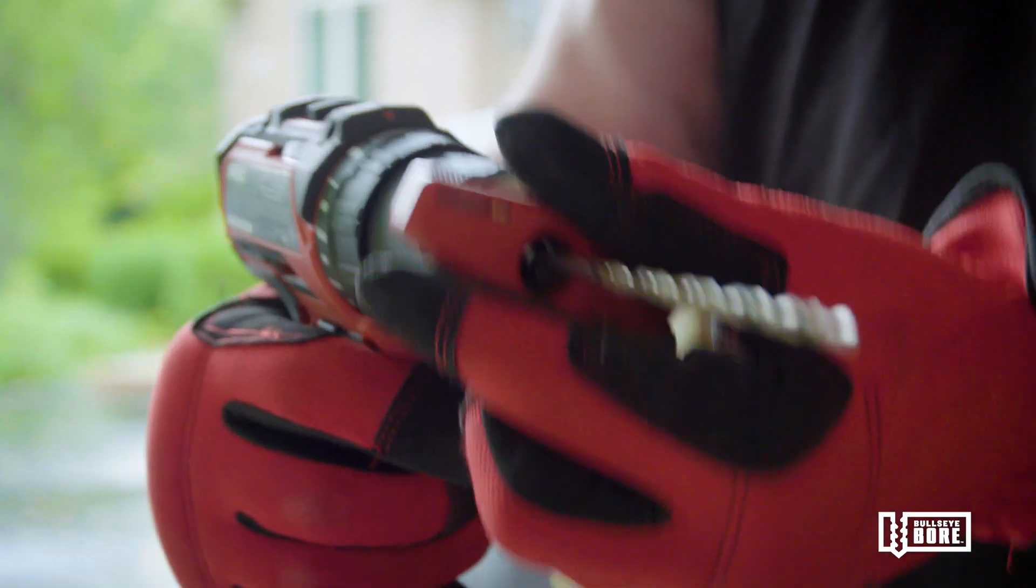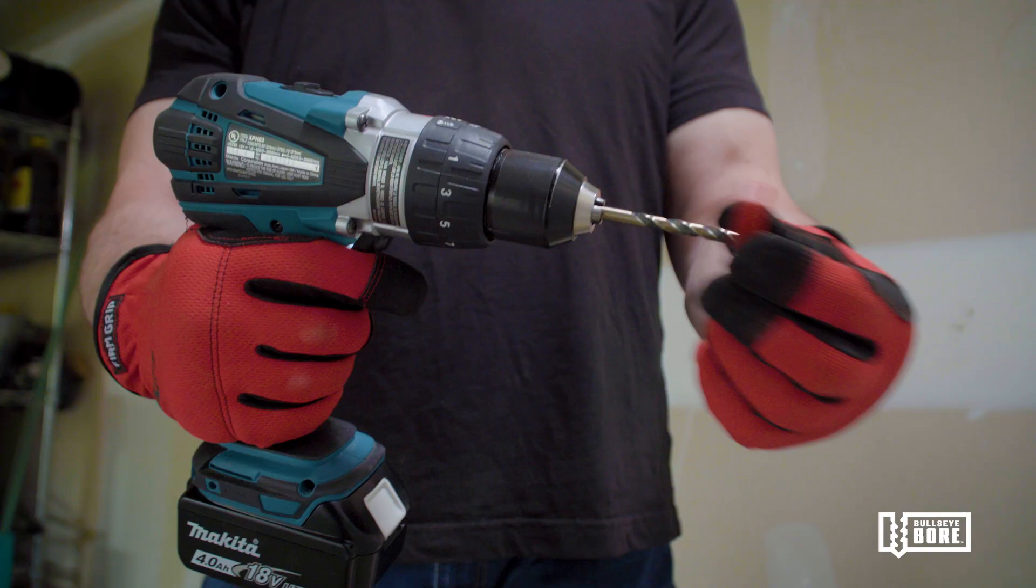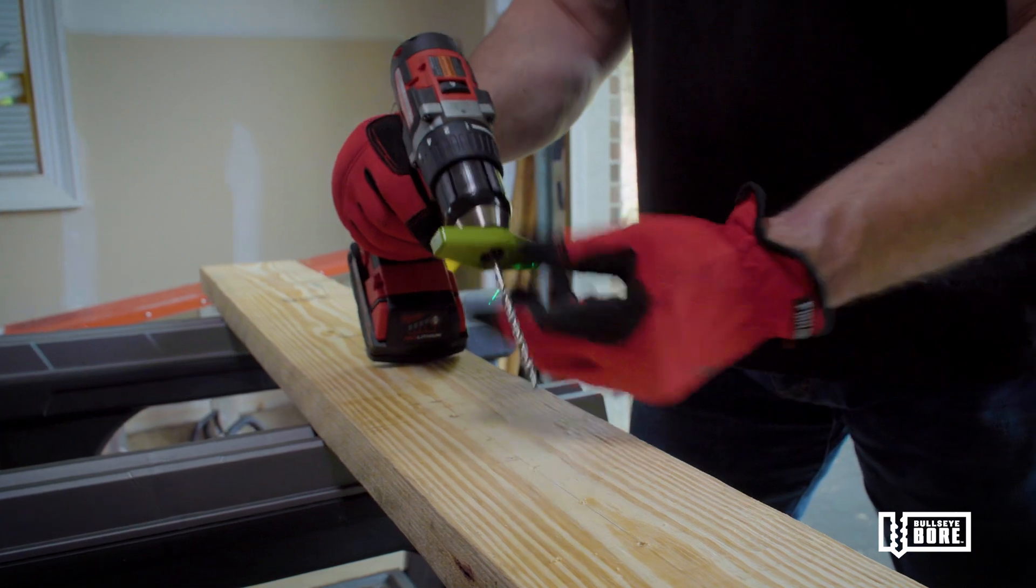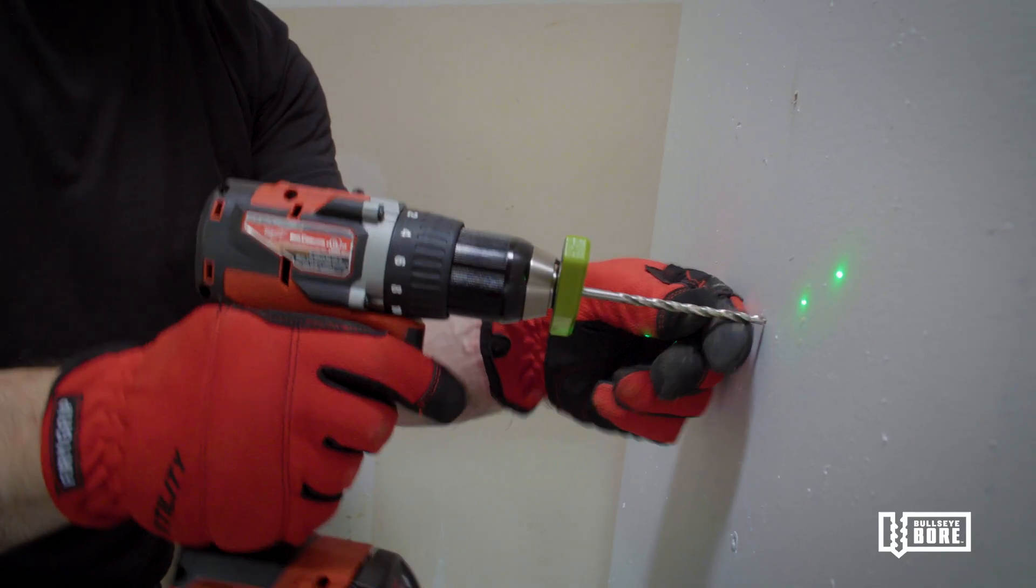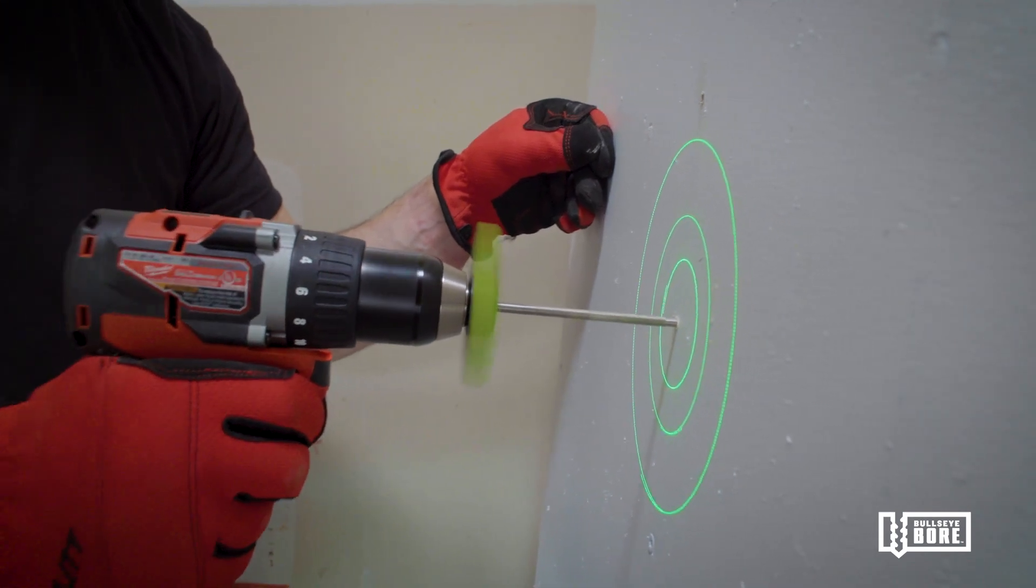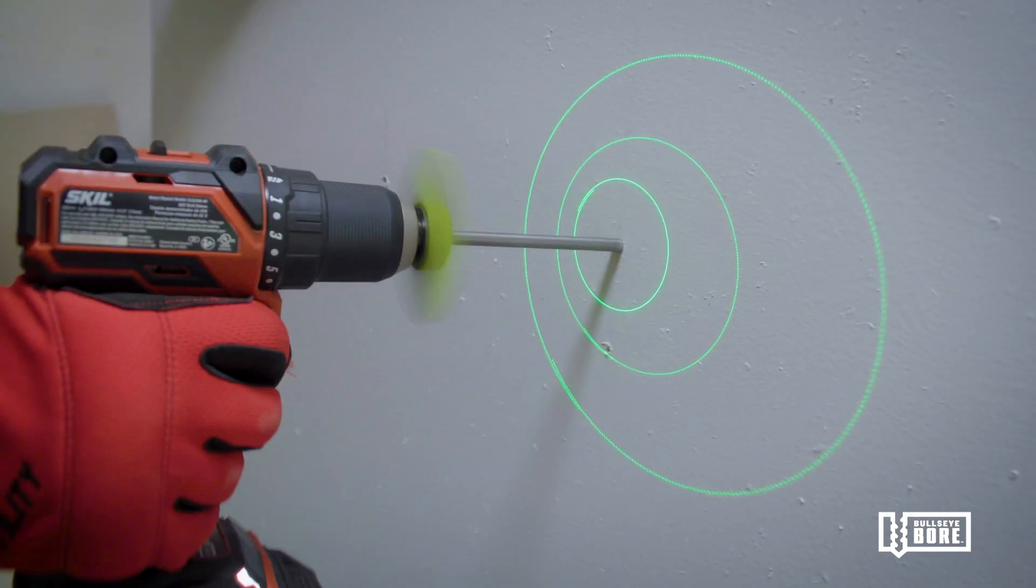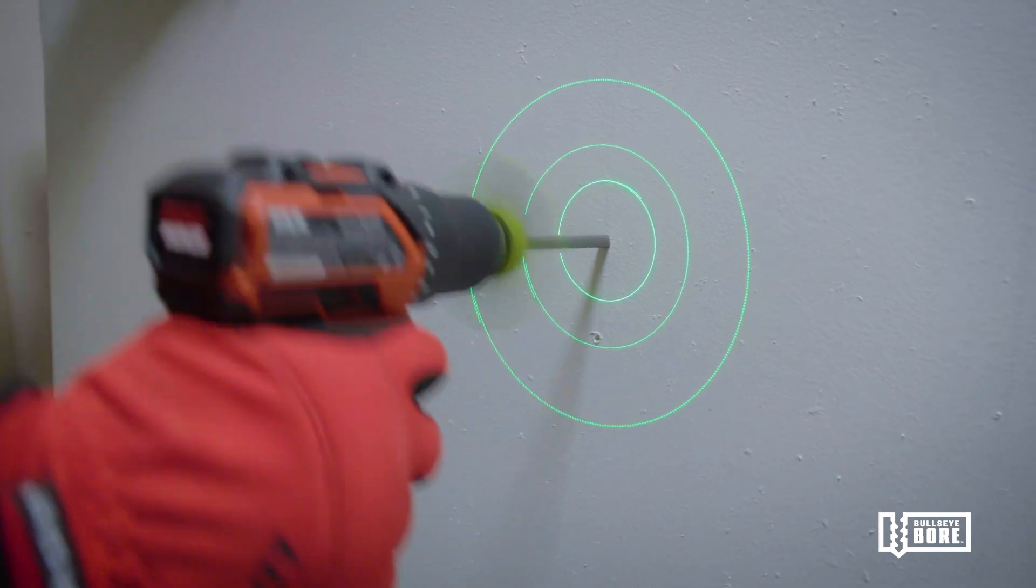And that's the reason why we invented Bullseyeboard Core. Bullseyeboard Core is a simple power drill accessory that mounts to the front of your drill chuck. It rotates with your drill and produces several easy to see circular patterns on the work surface.